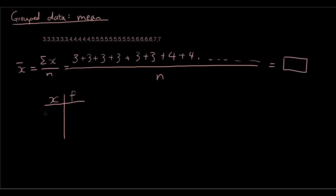So x represents the list of the different x values that we have in our data set. We have 3s, 4s, 5s, 6s, and 7s. So x is a list of the possible x values.